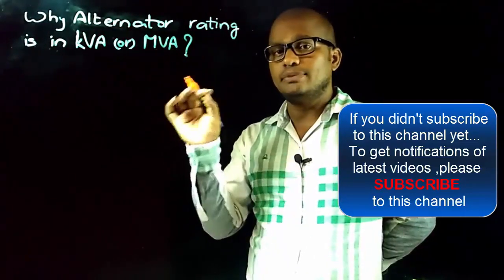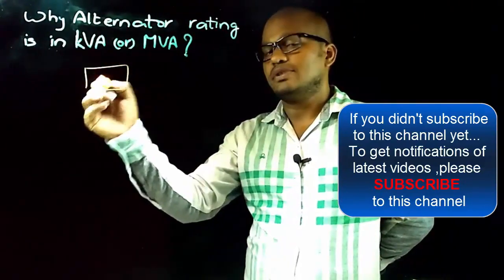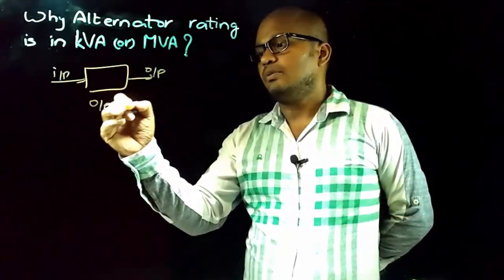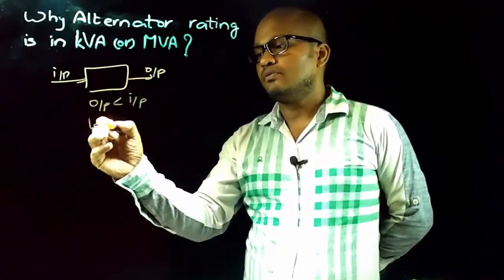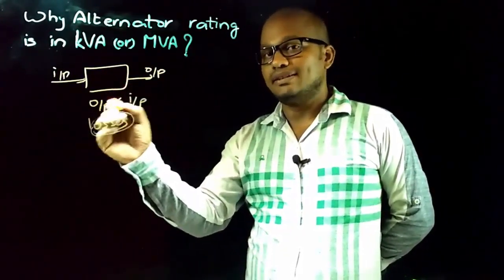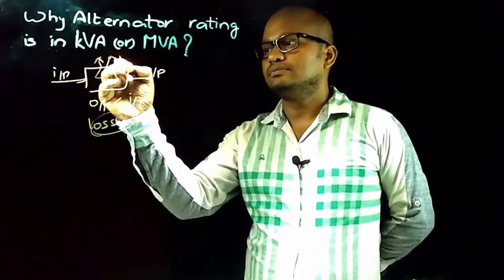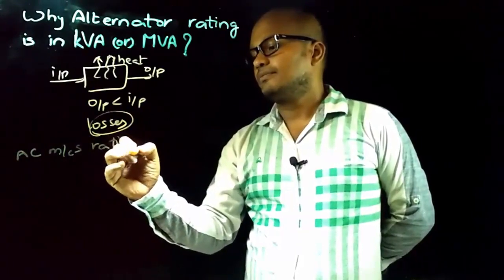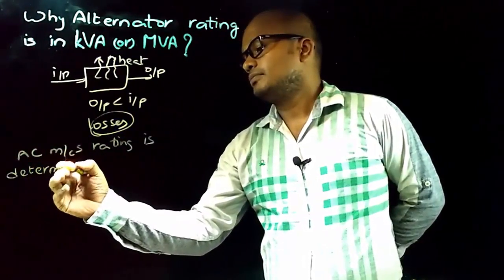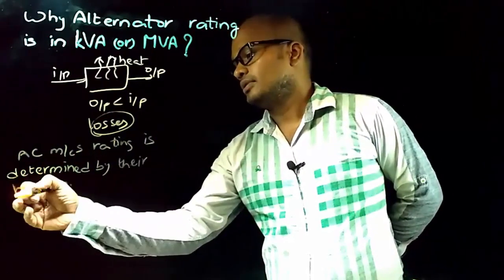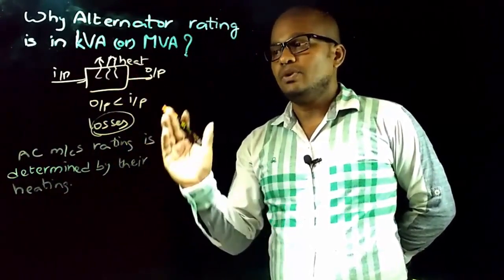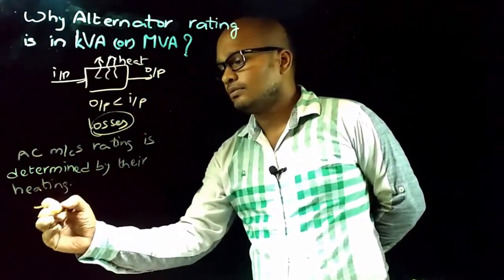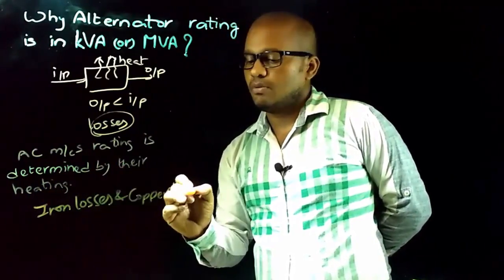The answer to this question is similar to that of the transformer, but there is a little difference. If this is a machine, the output will be less than the input because of losses present in that machine. These power losses are dissipated in the form of heat, and AC machine rating is determined by their heating, which is due to losses in that machine.